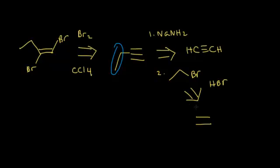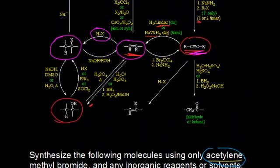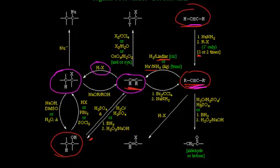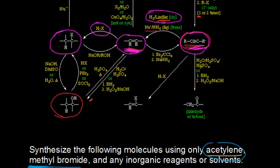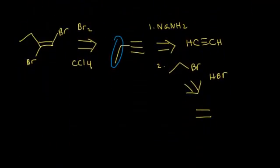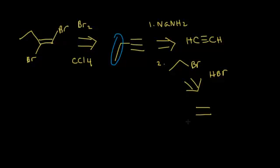I have an alkene now, but I have to start with acetylene. How do I make an alkene from an alkyne? Just go back to the flow sheet. I have my alkene, and I know how to make an alkene from an alkyne — all I have to do is hydrogenate it using my poison catalyst, Lindlar palladium. So I can make my alkene from an alkyne by adding hydrogen gas and Lindlar palladium.